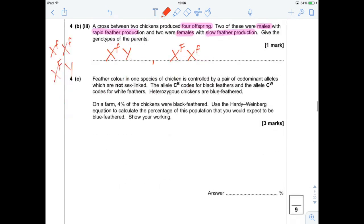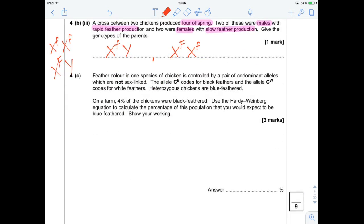Last one is a Hardy-Weinberg one. Feather color in one species of chicken is controlled by a pair of co-dominant genes, which are not sex-linked. The allele CB codes for black feathers, and the allele CW codes for white feathers. Heterozygous chickens are blue-feathered. On a farm, 4% of the chickens were black-feathered. Use the Hardy-Weinberg equation to calculate the percentage of this population that you'd expect to be blue-feathered to show your working.